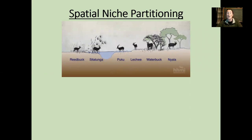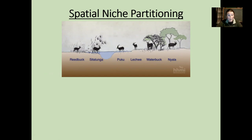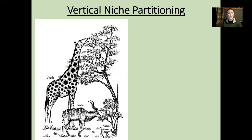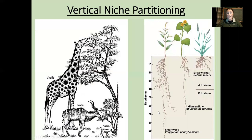Different species can partition niches apart spatially. Generally this is considered to be in horizontal space — each species has its own subset of the parameters of its fundamental niche, resulting in a much reduced realized niche. This can also be in vertical space, as with our classic lizard examples. We also have true vertical niche partitioning where different animals utilize vegetation at different heights, and plants can utilize different space both above ground and below, in both the roots and the shoots.